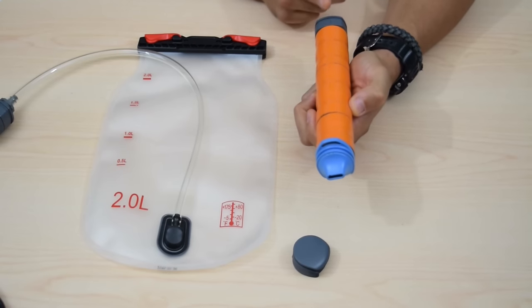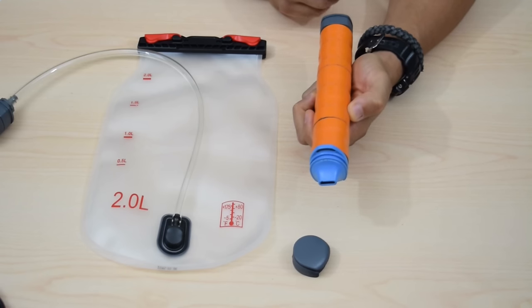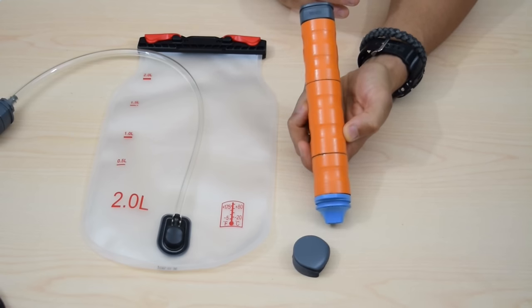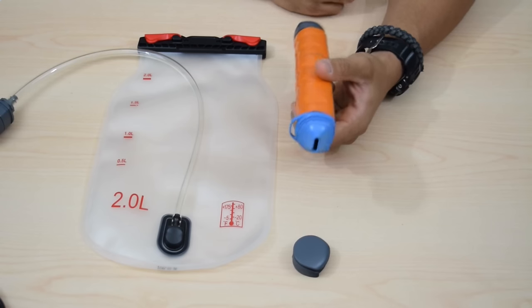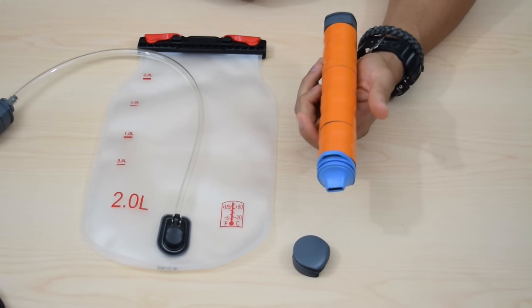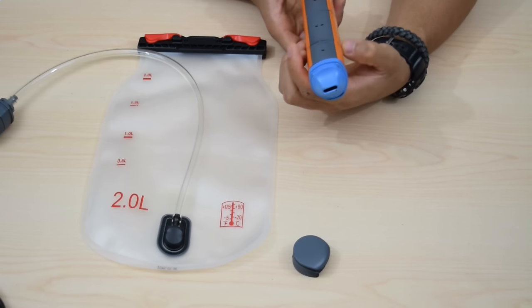It would be nice on these water filtration systems if there was some sort of indicator as to when the water filter was not good anymore. I know some of them just stop working, and that's an indication that they're not good. And the suction stops.